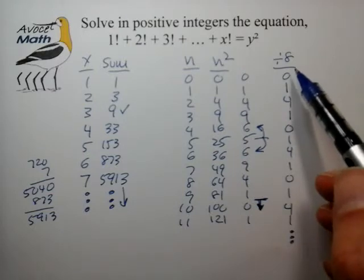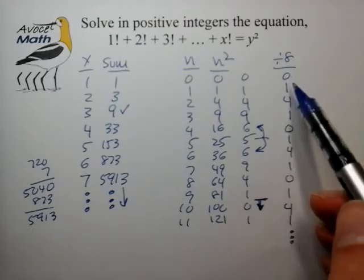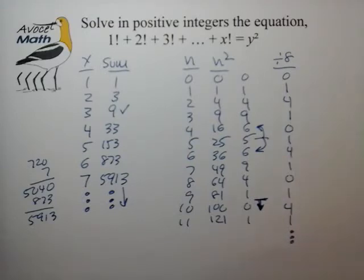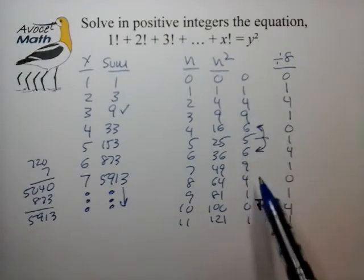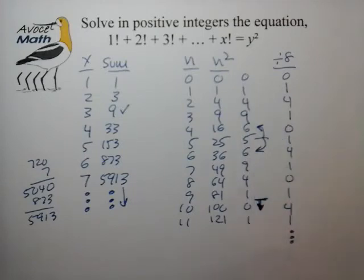So here it's quite useful in that we see that for division by 8 the remainder can only be 0, 1 or 4. It can't be 2, it can't be 3, it can't be 5, it can't be 6, it can't be 7.